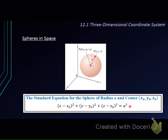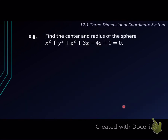For example, let's say we would like to find the center and the radius of the sphere x squared plus y squared plus z squared plus 3x minus 4z plus 1 equals 0. Obviously, this is not a standard equation — we can't find the center and radius based on this form. So first of all, we have to change it into standard form.